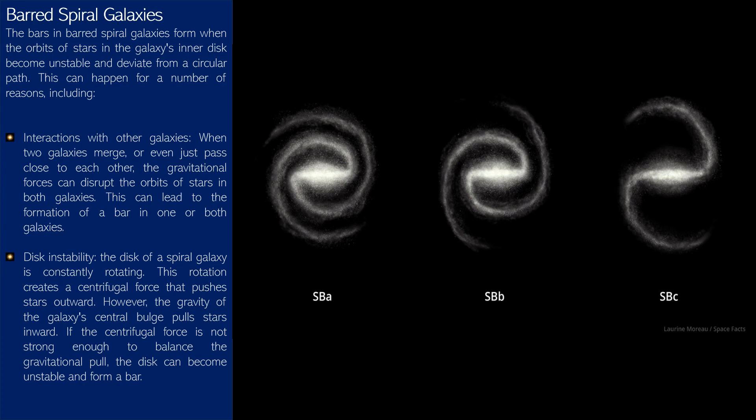When two galaxies merge or even just pass close to each other, the gravitational forces can disrupt the orbits of stars in both galaxies. This can lead to the formation of a bar in one or both galaxies.